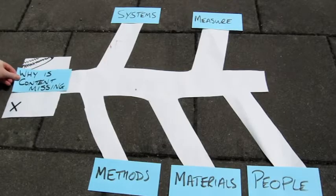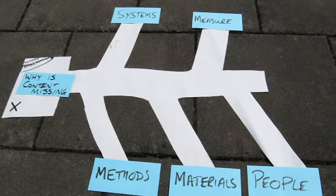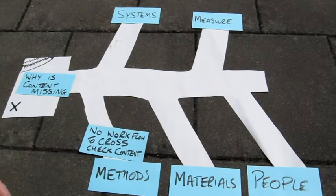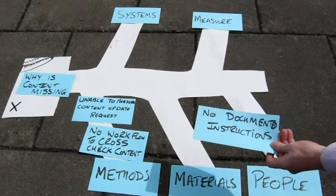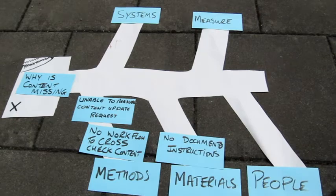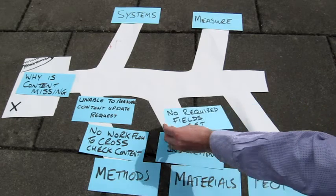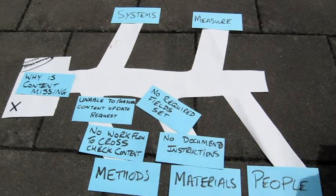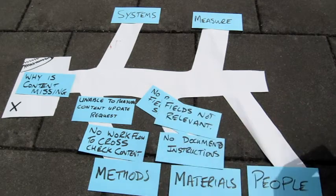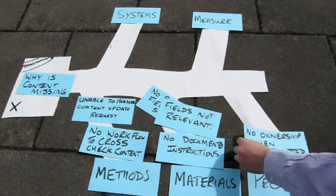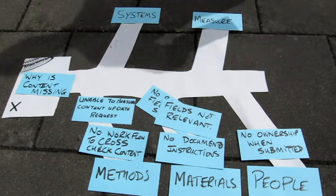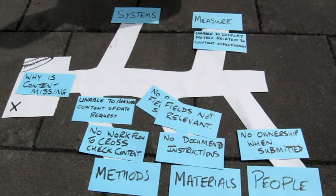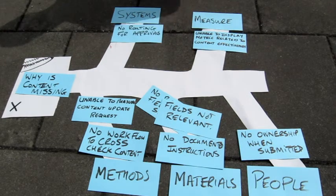In our how-to example, our problem is always having content missing from the forms. Then, theme by theme, we work through the different possible causes, such as no cross-checking, no instructions available, no ownership, no routing for approvals. It's great to do this with a team of people that are involved in your project.